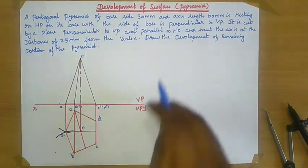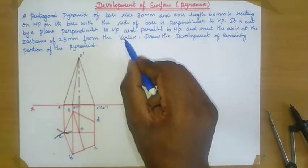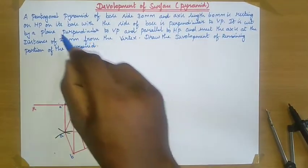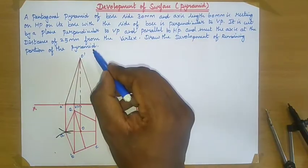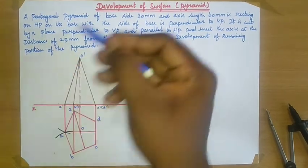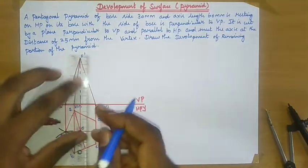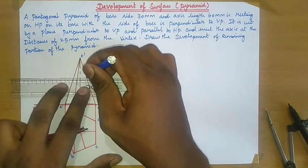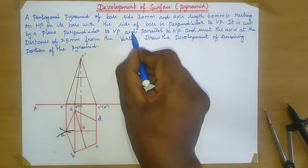For the front view section, name this point as A-dash, this one is B-dash and E-dash, this one is C-dash and D-dash, and this one is O-dash. It is cut by a plane perpendicular to VP and parallel to HP, and meets the axis at a distance of 25 mm from the vertex. Draw one line parallel to HP representing the cutting plane.